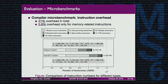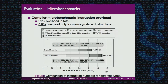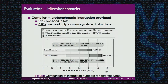We also did an evaluation on the instrumented compiler, characterizing instructions into several categories: memory access, data processing, multiply, branch, floating-point, and other instructions. We looked at the overhead introduced at the instruction level — about 20% overhead in total. When we look specifically at memory-related instructions, there is only about 0.8% overhead, which may introduce more CPU cycles.